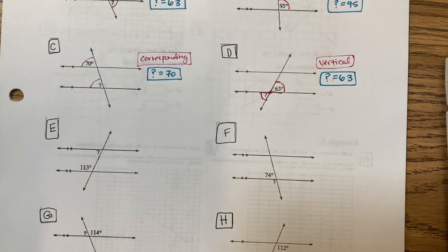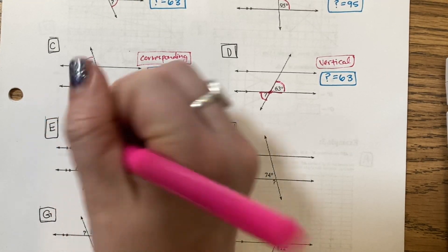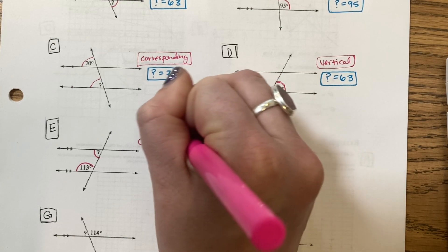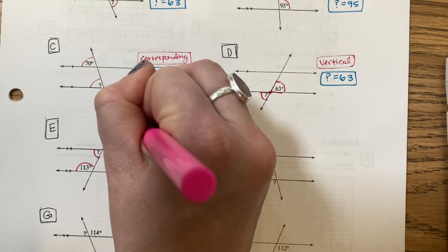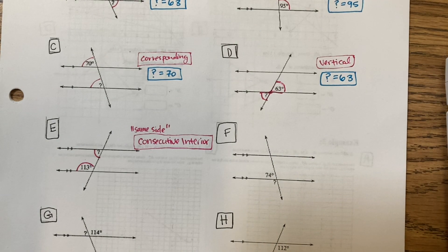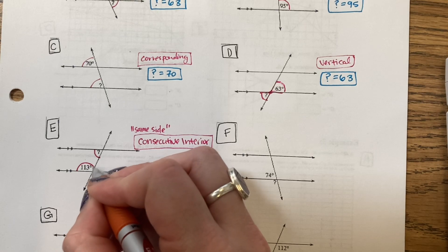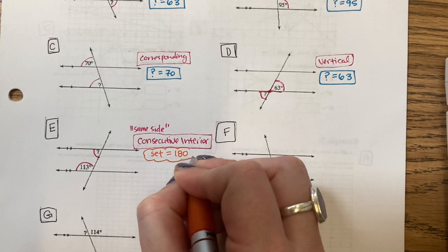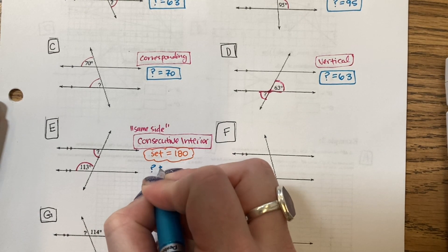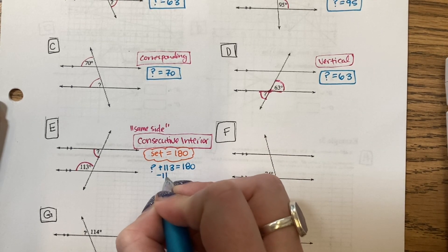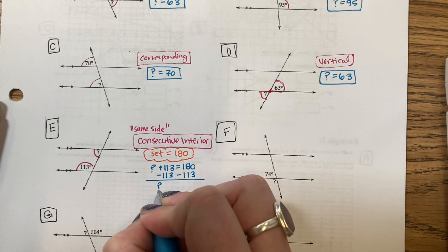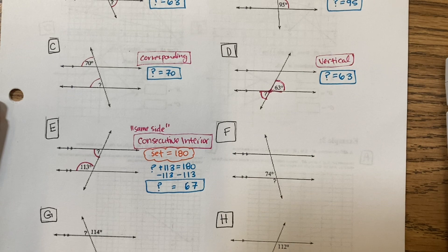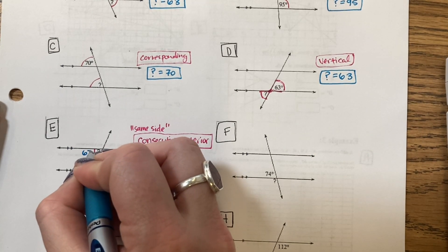On question E, I'm given the question mark and the 113. Those are consecutive interior. Interior, sometimes they call them same side interior. They are different sizes. This is an obtuse angle, this is acute. So I'm going to set them equal to 180 to solve it. So I would have question mark plus 113 equals 180. That's 67 degrees. So this one would be in that corner.